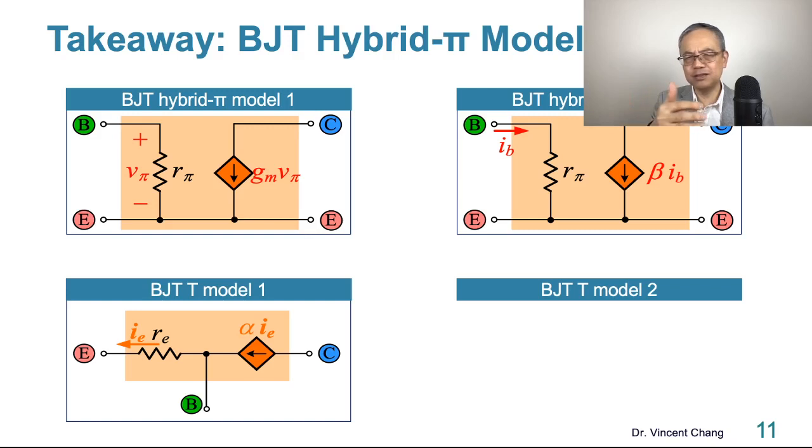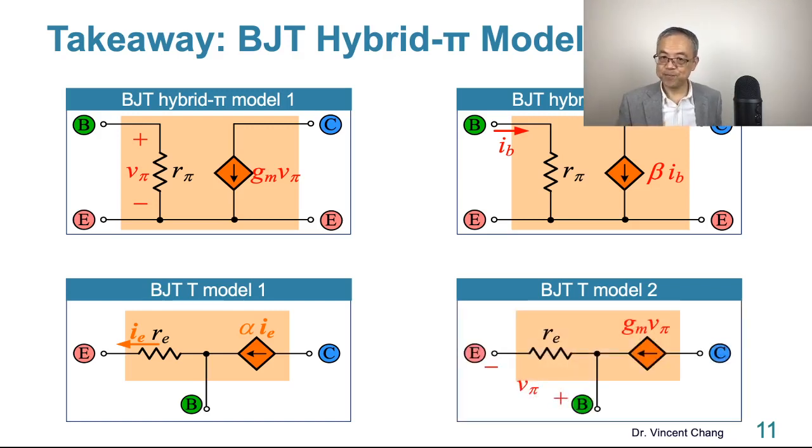If you find that gm times Vpi kind of stuck, you feel kind of defeated, then you switch to another one. Same thing with T-model two. The control signal could be Vpi, the voltage control current source. Look at the bottom. On your left-hand side, it shows current control current source. But on the right is voltage control current source. Any one of the four can solve the problem and should give you the same outcome.